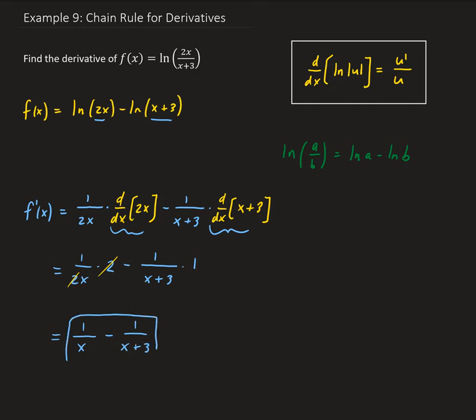This is the derivative for our function. We simplified it first by applying this property for the natural log, and then taking the derivative. We can simplify the function, and sometimes that will help with the simplification of the derivative process.